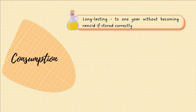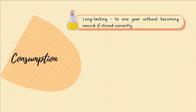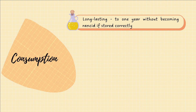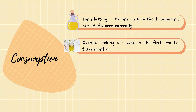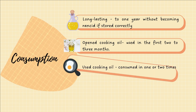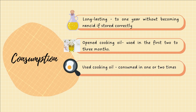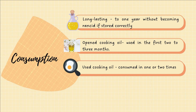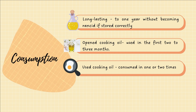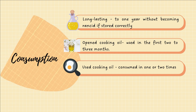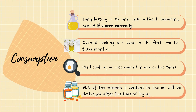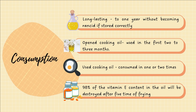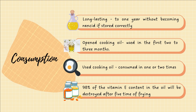In the fourth phase of the product life cycle is consumption. Well-produced, high-quality cooking oil can last up to one year without becoming rancid if stored in a dry, cool place with the lid tightly sealed. But once opened, cooking oil can be used within the first two to three months. When already used, it should only be consumed one or two times, because during frying, cooking oil releases toxic wastes called aldehydes that remain in the oil. Foods fried using reused oil will absorb these toxic aldehyde residues. Additionally, 98% of the vitamin E content in the oil will be destroyed after five times of frying using the same cooking oil, so we must practice caution to ensure it does not harm our health.